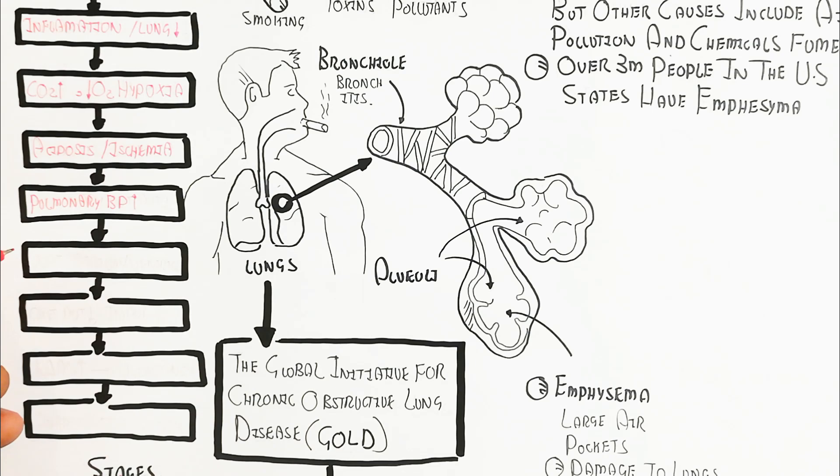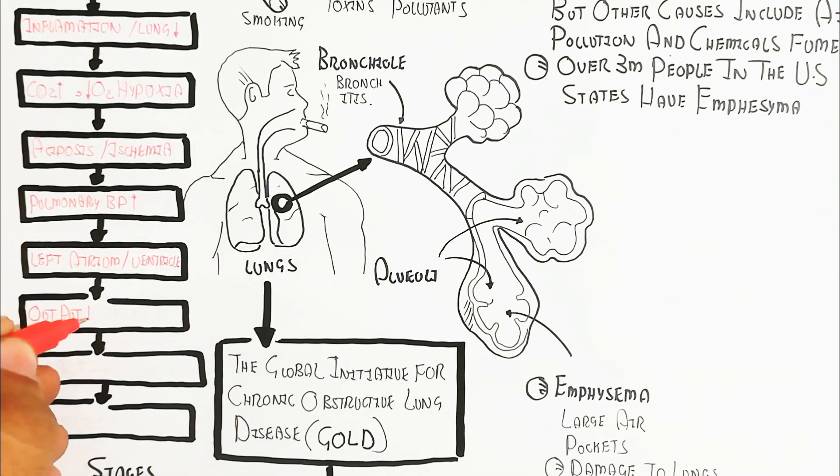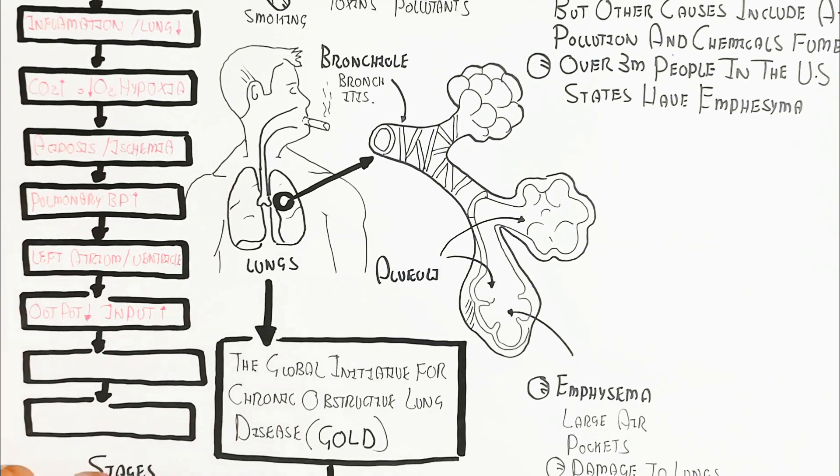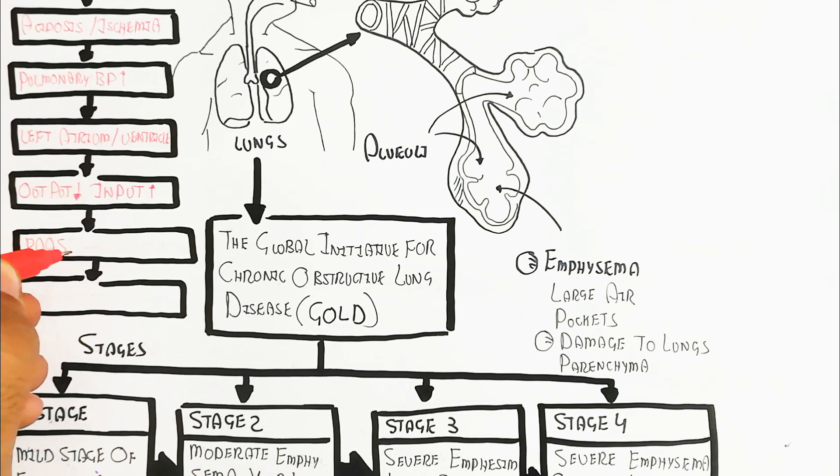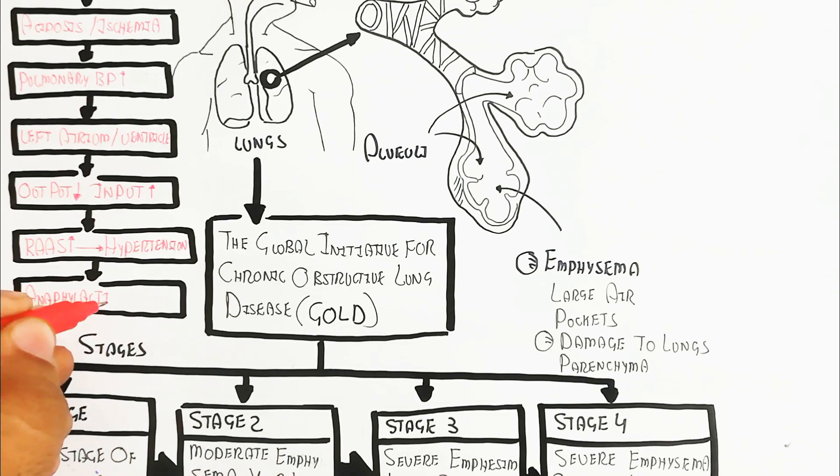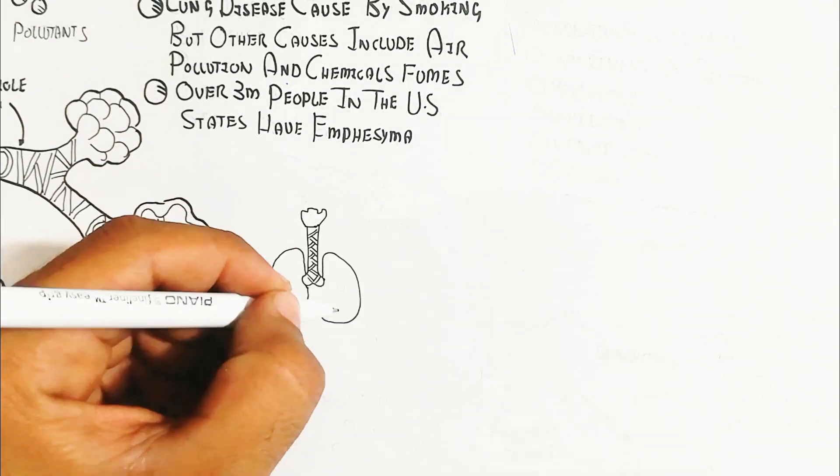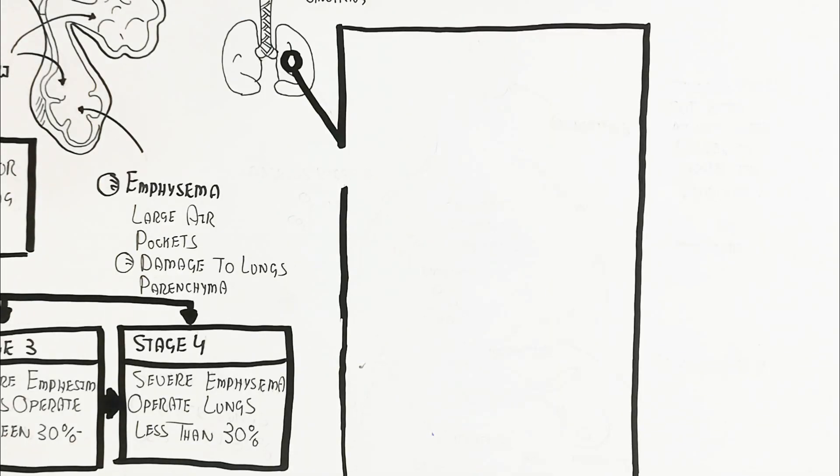Acidosis and ischemia occur, increasing pulmonary blood pressure and causing hypertension. Left ventricular output decreases while input increases, decreasing pulmonary circulation output.